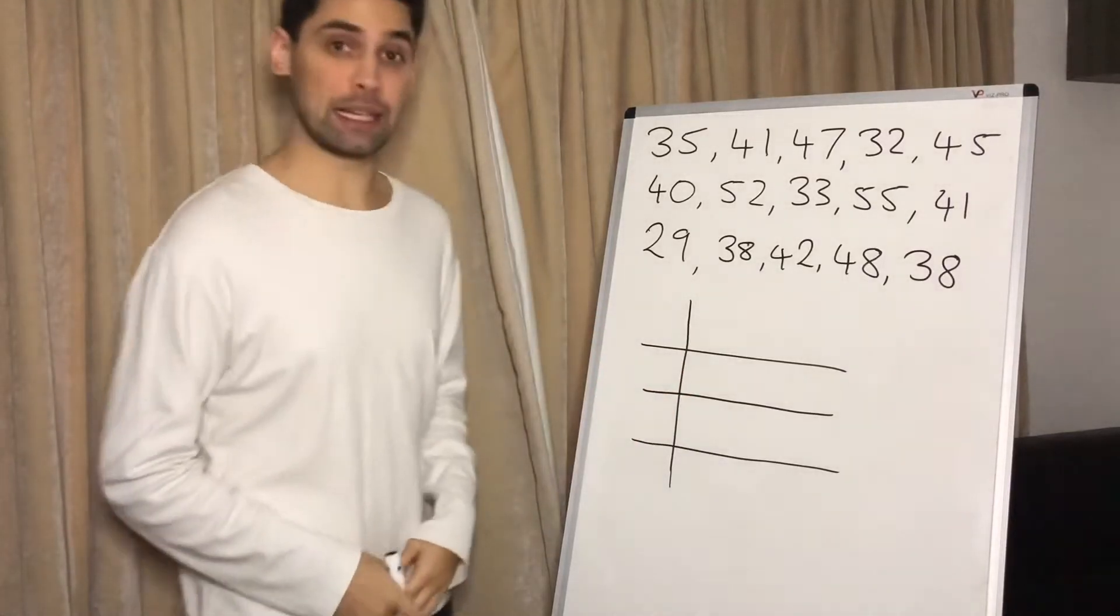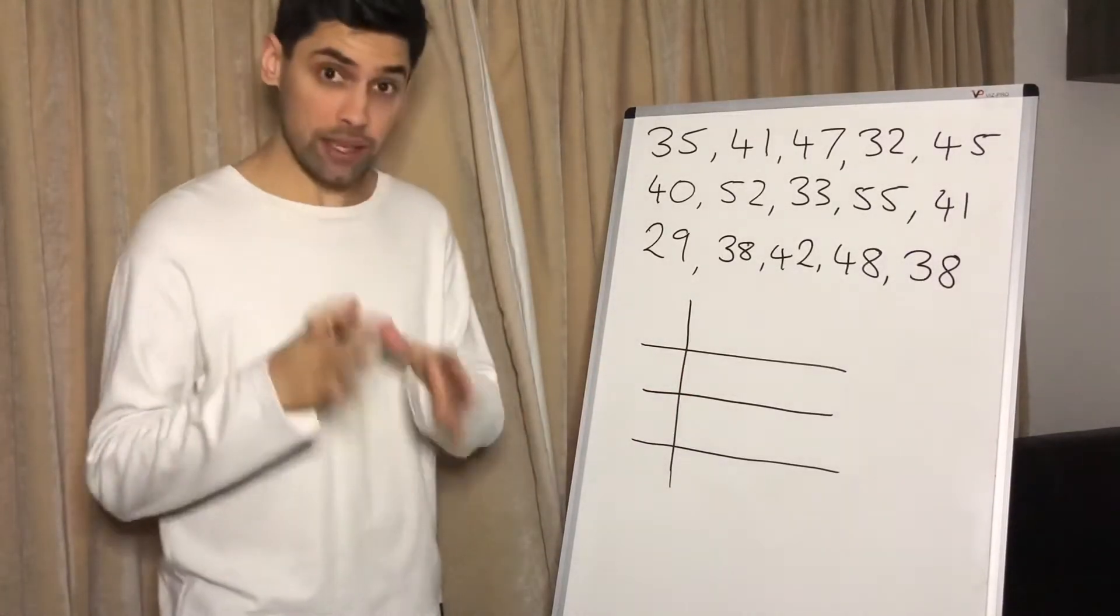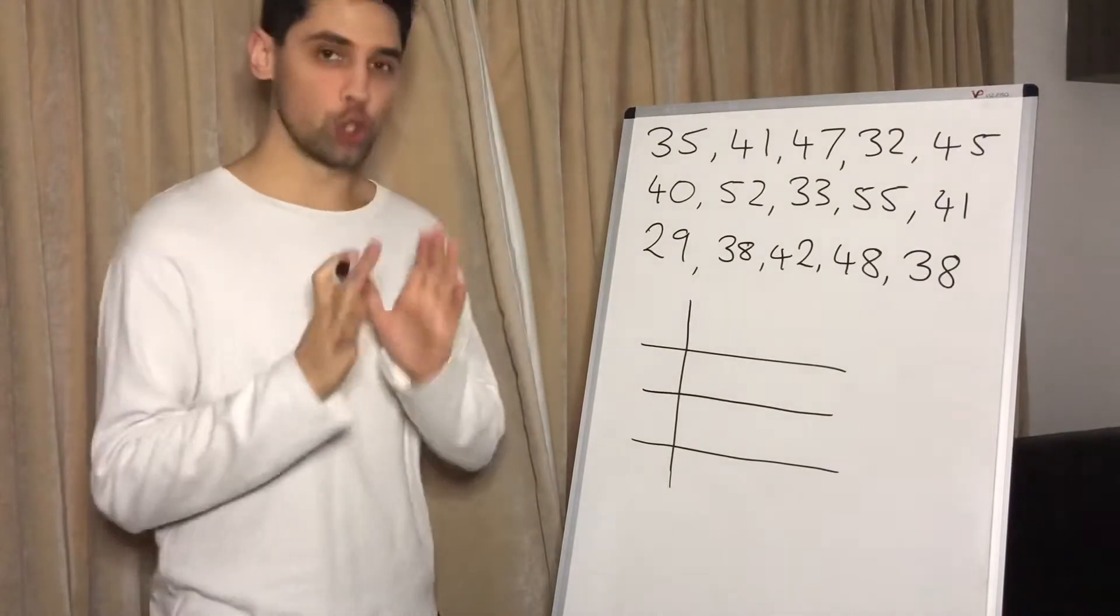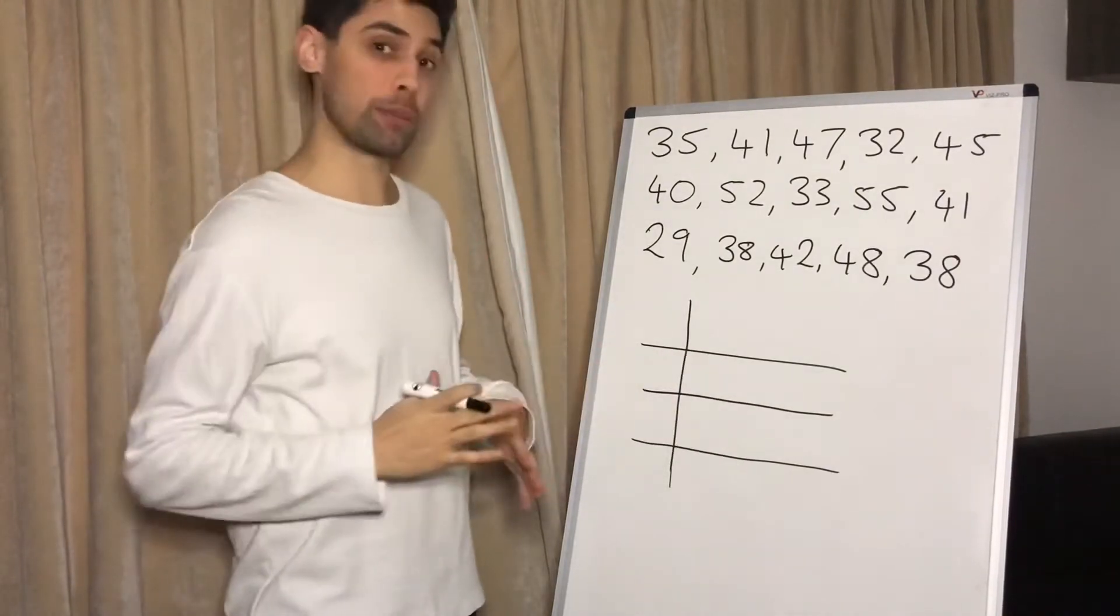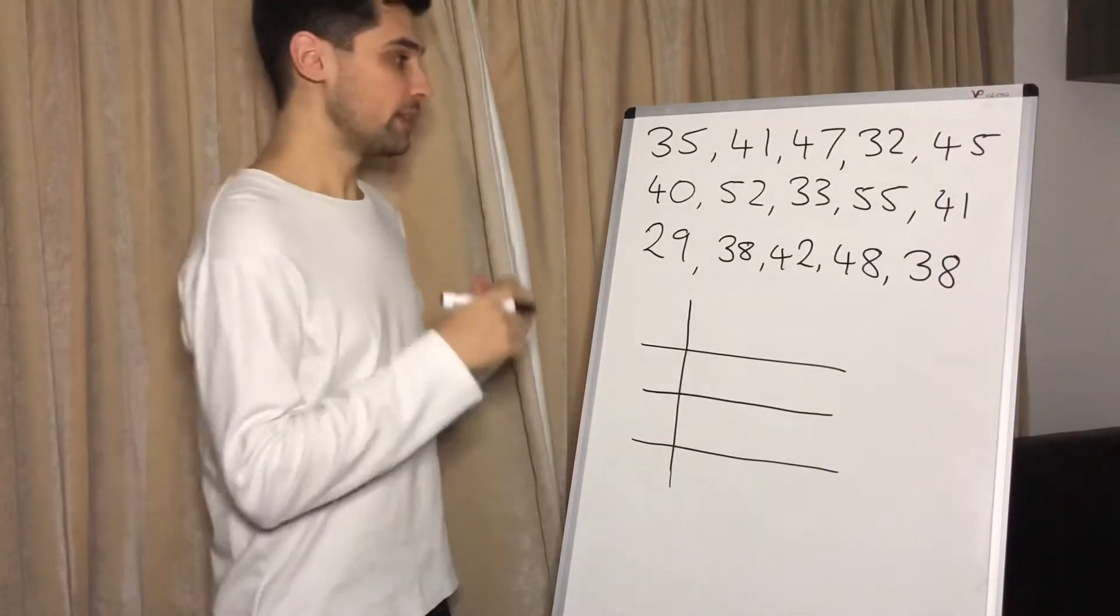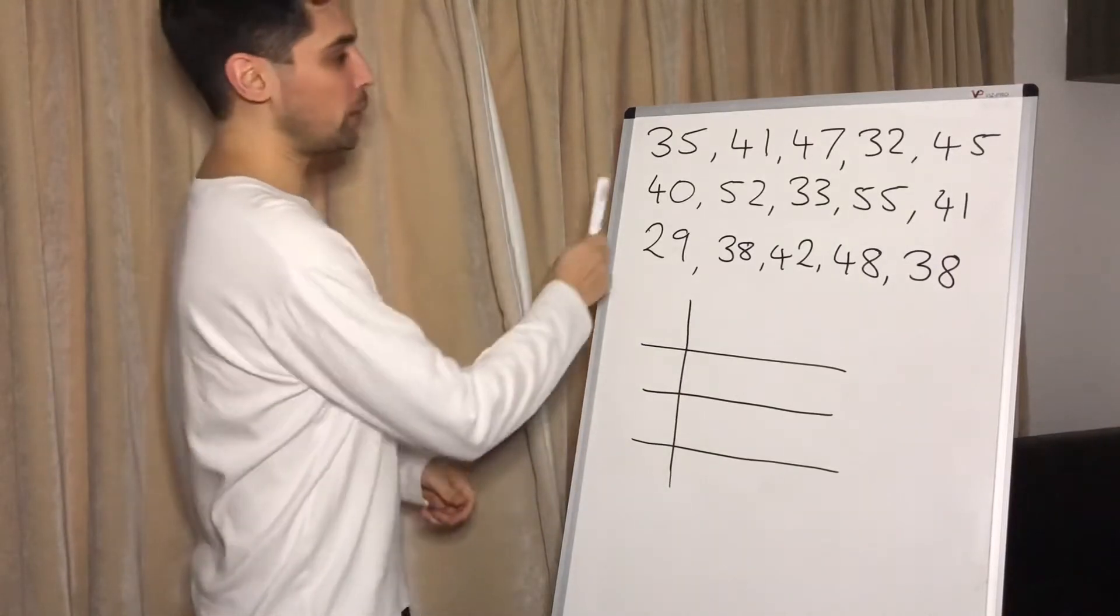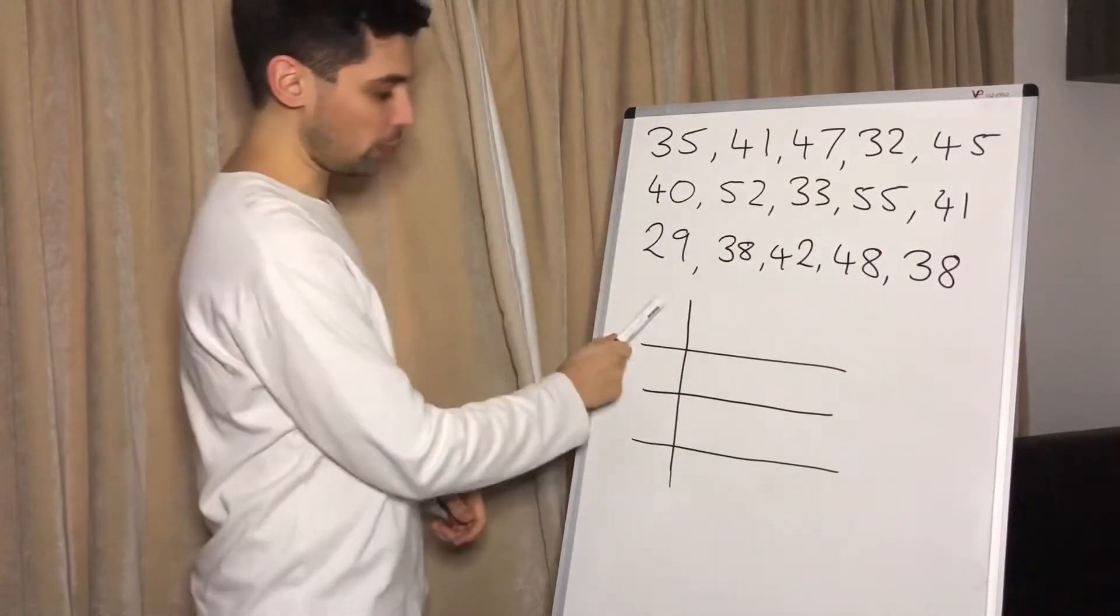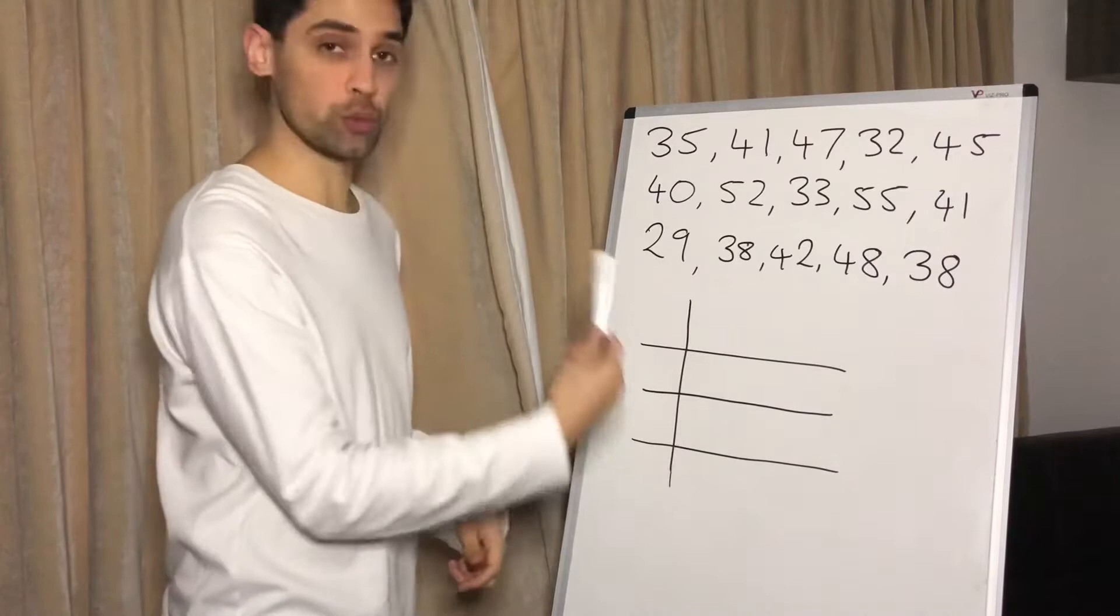Okay, let's learn about stem and leaf diagrams. So in theory these are really easy, but we need to be super careful because there are a lot of areas we can make some silly mistakes. So this is how we do them. Basically, we want to make all of these numbers go into certain columns and rows.